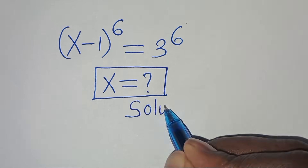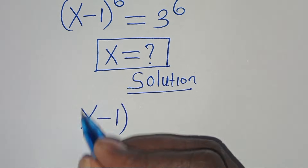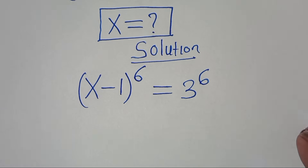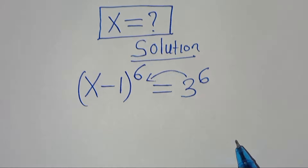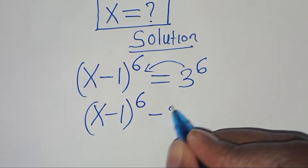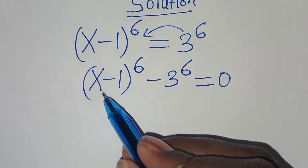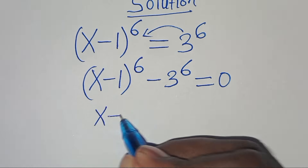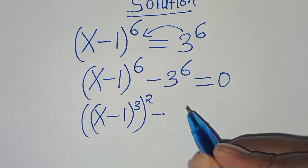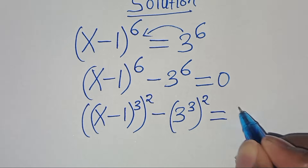From here we have (x minus 1) to the power of 6 equals 3 to the power of 6. Let's take 3 to the power of 6 on the left hand side so that we have (x minus 1) to the power of 6 minus 3 to the power of 6 equals 0. We can express (x minus 1)^6 as [(x minus 1)^3]^2 minus [3^3]^2, which equals 0.